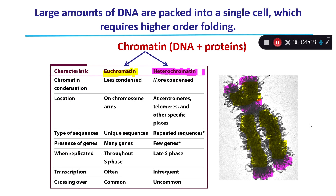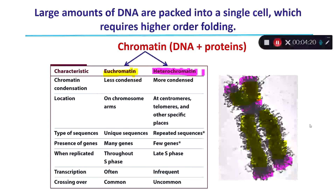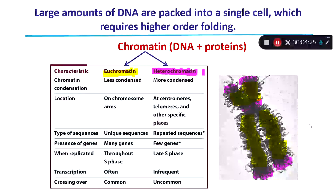When DNA is being expressed or when a gene is turned on, it doesn't look at all like that. It's much less condensed and less associated with proteins so that the enzymes responsible for either replicating it or expressing it can access the DNA. When DNA is wrapped around a protein, it is not as accessible and so the enzymes can't bind to it.